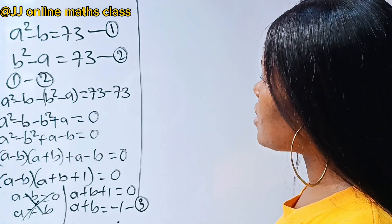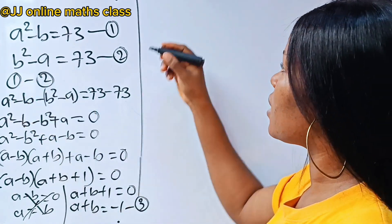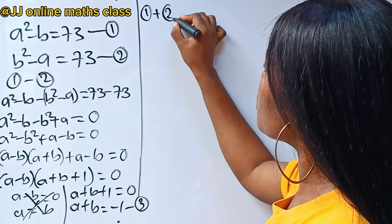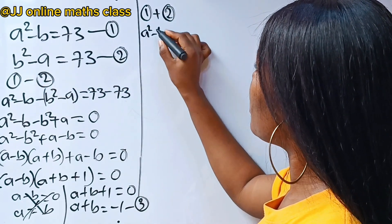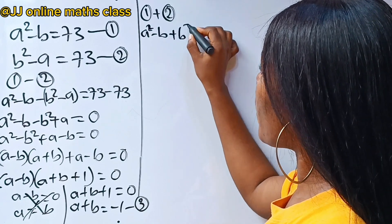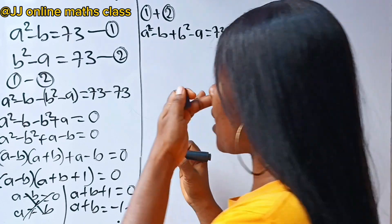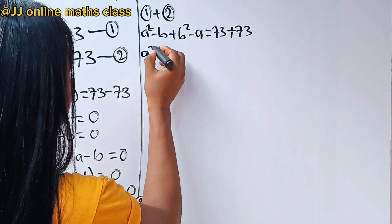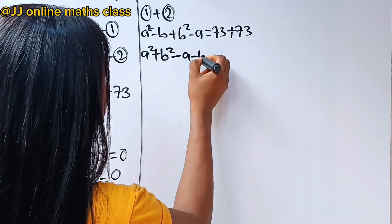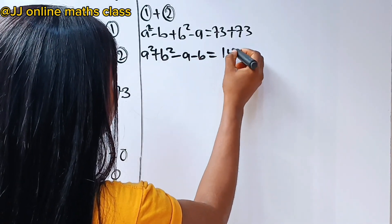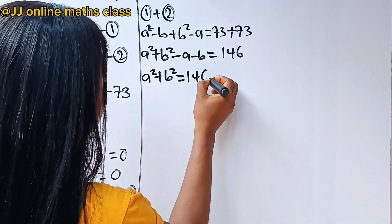We've subtracted equation 2 from equation 1. Now let's add both of them together. Equation 1 plus equation 2 gives a squared minus b plus b squared minus a equals 73 plus 73. We can bring out a squared plus b squared, then minus a minus b equals 146.